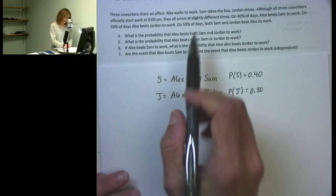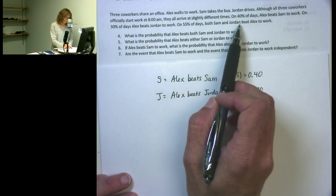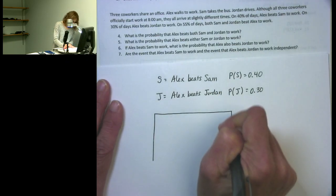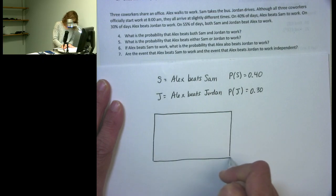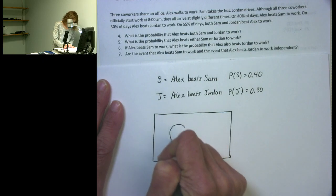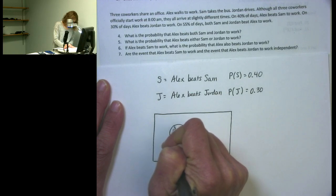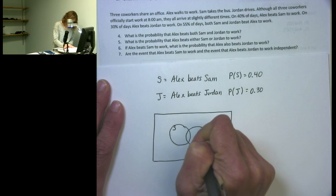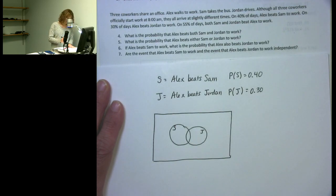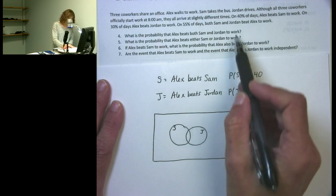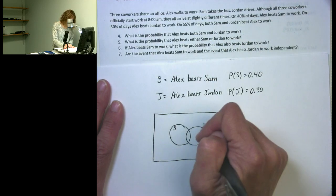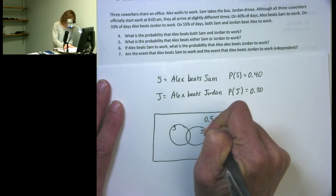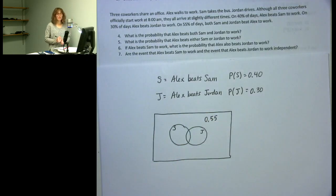On 55 percent of days, both Sam and Jordan beat Alex to work. Looking at the Venn diagram, the part representing Alex beating Sam is one region, the part representing Alex beating Jordan is another, and both Sam and Jordan beating Alex is the region outside both of those events — that has a 55 percent chance.